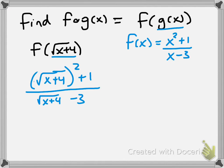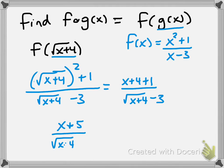When I evaluate, when I square my square root, it'll cancel out. And I'll have x plus 4 plus 1 over the square root of x plus 4 I can't do anything with. So I leave it as so. So I'm left with, after I simplify, x plus 5 over the square root of x plus 4 minus 3. So this is my composite function.